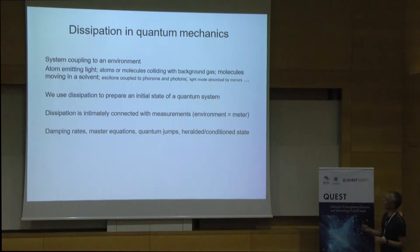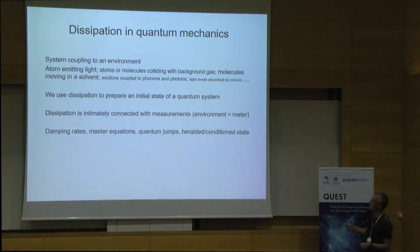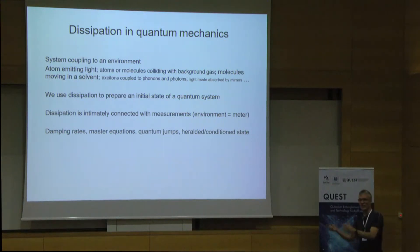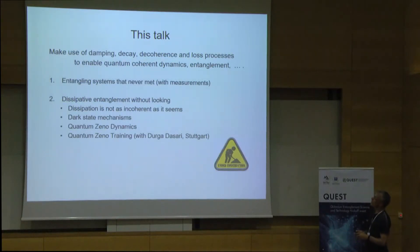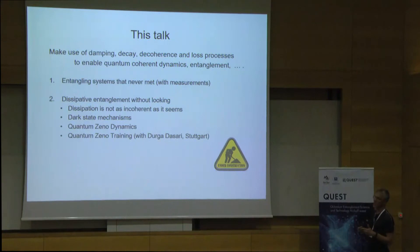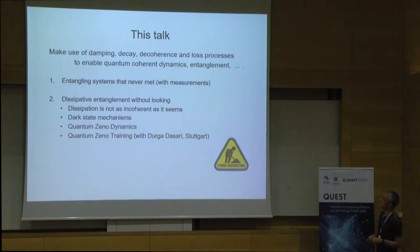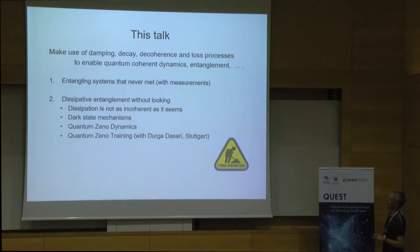I'm not going to show a lot of equations and formalism in this talk. I'm going to talk about physical systems. The damping goes in as damping rates in your physical system. I will give a few examples of how the damping, decay, decoherence, or loss helps us create really interesting quantum states — really interesting pure quantum states, for example entangled states of several particles. I'll first talk about entangling systems that never met using measurements.